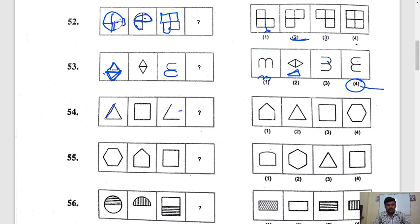Question 54. They gave triangle. It has become square. One line came extra. Here also one line came extra. So it should be triangle. Where is the triangle? This is not, this is not, this is not. Where is second one is the triangle?